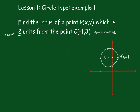To find the equation of this locus, we know that PC, the distance PC, is equal to the square root of x minus negative 1, which is x plus 1, all squared, plus y minus 3, all squared. But PC equals 2, so that would be equal to 2.